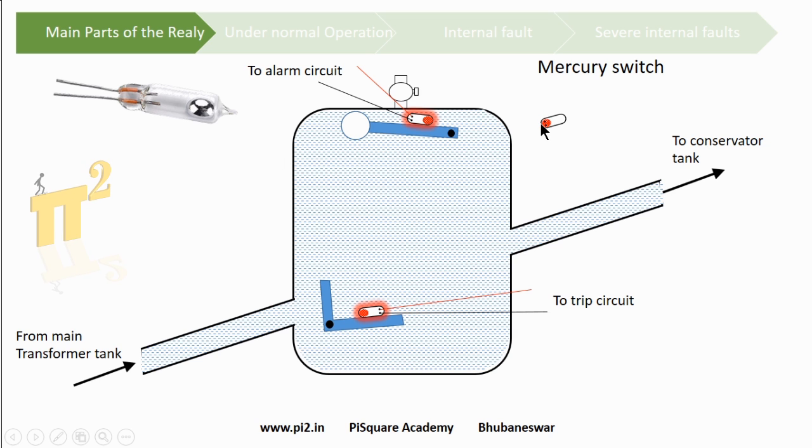If you see here, when the mercury switch is tilted, the mercury comes down and shorts these two contacts.